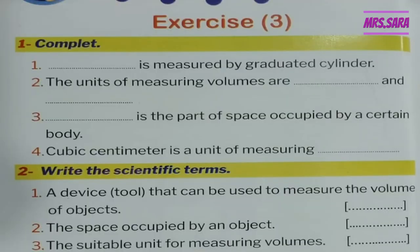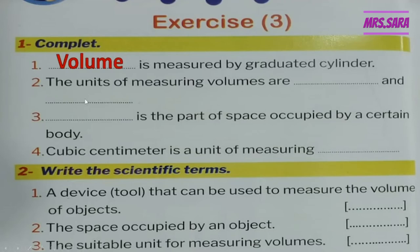Now we have some questions. Question one: What is measured by a graduated cylinder? The magic word is 'graduated cylinder' — it is the measuring tool of volume, so the answer is volume. Question two: The units of measuring volume are what and what? The measuring units of volume are liter and cubic centimeter.